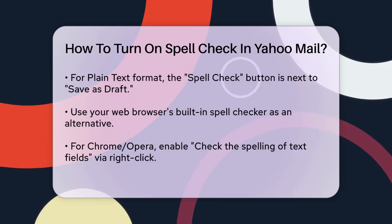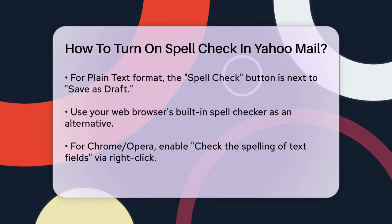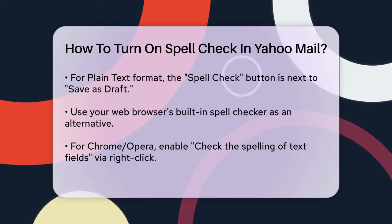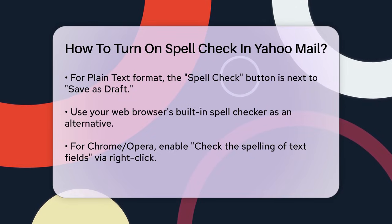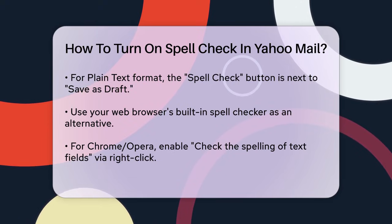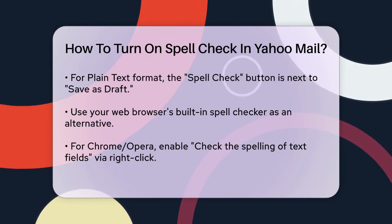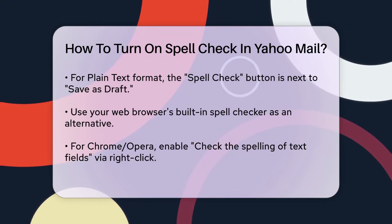Another way to ensure your emails are spellchecked is by using your web browser's built-in spellchecker. If you're using Chrome or Opera, right-click in the text field of your email and make sure 'Check the spelling of text fields' is enabled. You can also access language settings from this menu to add or remove language packs.